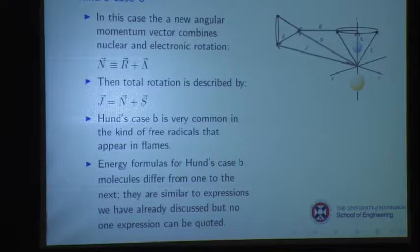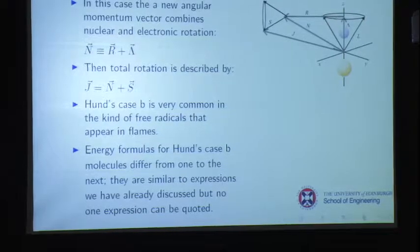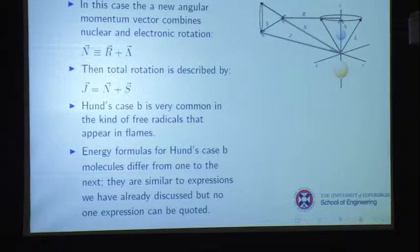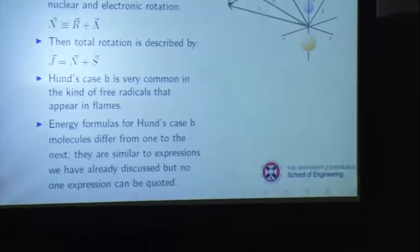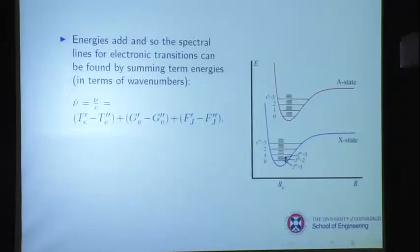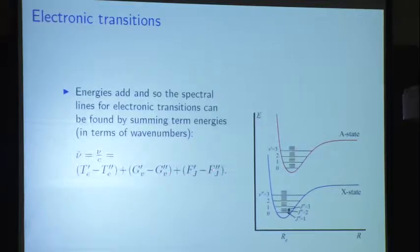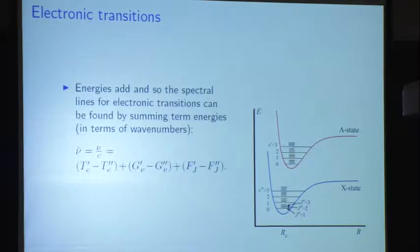The energy formulas for Hund's Case B molecules are different from one to the next — similar to what we've discussed but fairly complicated, with lots of special cases. We're beginning to radically depart from fitting to simple expressions. We've noticed lots of things that don't follow exactly what we've been observing. These simple-minded expressions don't actually hold, so we're adjusting them to match what happens in the real world. The energies add up, and spectral lines for electronic transitions are found by summing terms — the wave number is just the difference between these different term energies.